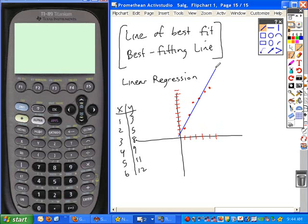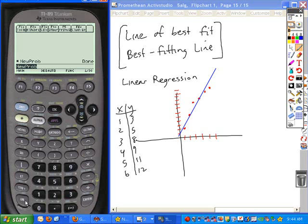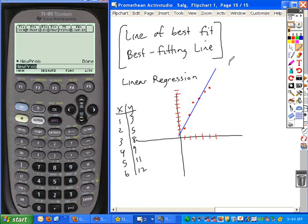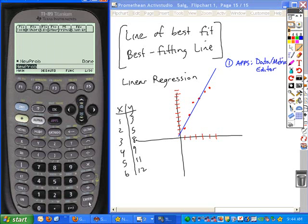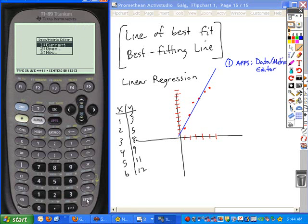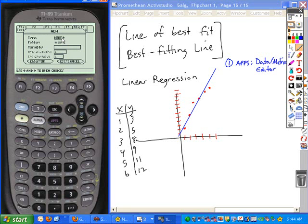And so when you're looking to find the line of best fit, your book's going to talk about estimating that line of best fit, but we're not going to estimate it. We're going to actually find it because we have access to the calculators. So you guys recall the steps that are required to finding or using linear regression on this. Step one is to do what? So under the apps, you're going to go to data matrix editor. So we'll access, under applications, data matrix editor. You may have to create a new file. If you create a new file, keep it as data. Scroll down, keep it in the main folder. Under variable, you need to give it a name.